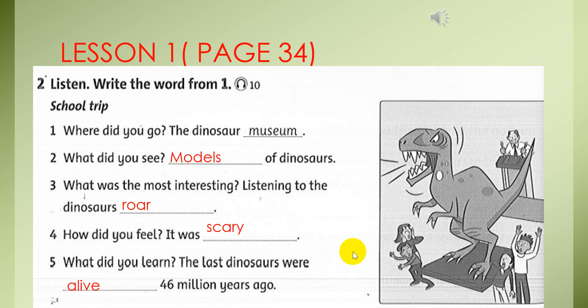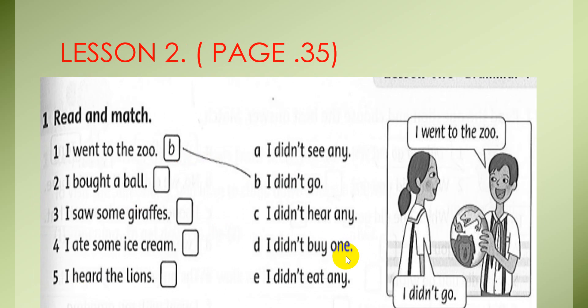And now we move to lesson 2, page 35. Exercise 1, read and match. And now you read, and after that you match which. Number 1, I went to the zoo. I didn't go. And number 2, I bought a ball. I didn't buy one.